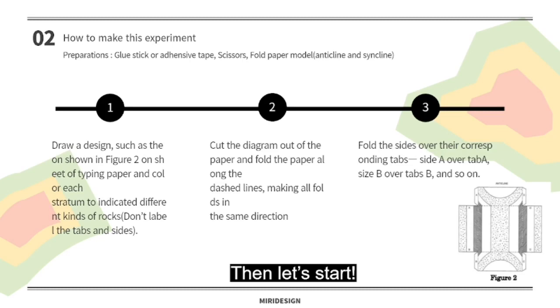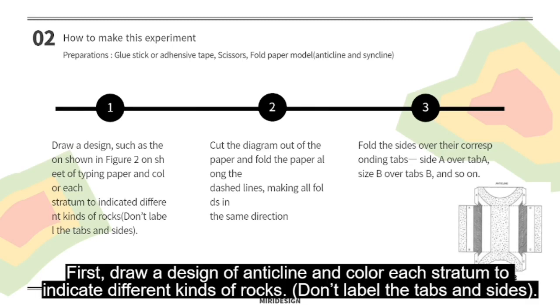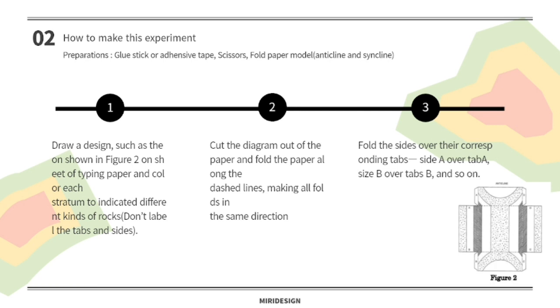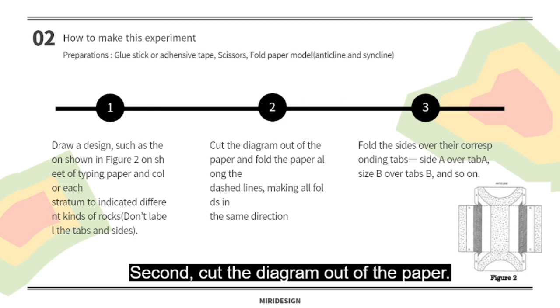First, draw a design of anticline and color each stratum to indicate different kinds of rocks. Second, cut the diagram out of the paper.